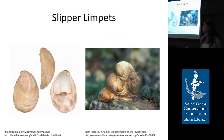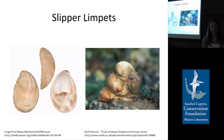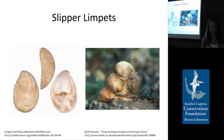Slipper limpets are a diverse group of filter feeding gastropods with a shelf structure their muscle is attached to, so it looks kind of like a slipper. The common genus is Crepidula. Studies have shown they can filter a lot of different particle sizes and continue filtering at high cell densities without gills getting clogged. The most studied species is Crepidula fornicata, found all along the east coast of America, and it's also an invasive species on the west coast and in Europe.